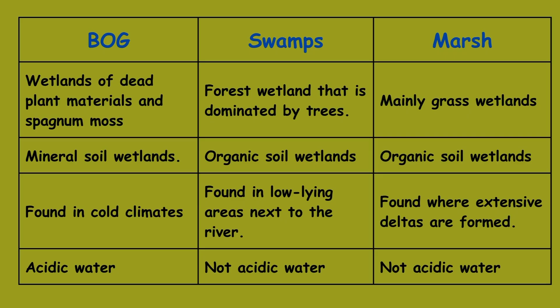Now let us see in tabular form the difference between bog, swamps, and marsh. Bogs are rich in dead plant materials and sphagnum moss. Swamps are forested wetlands dominated by trees. Marshes are mainly grass wetlands. Bogs are organic soil wetlands, whereas swamps and marshes are mineral soil wetlands. Bogs are found mainly in cold climates. Swamps are found in low-lying areas next to rivers, and marshes are found where extensive deltas are formed. The water in bogs is mostly acidic, whereas the water in swamps and marshes is not acidic in nature.